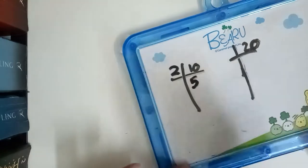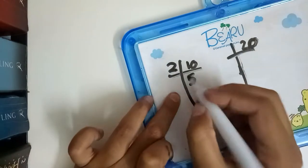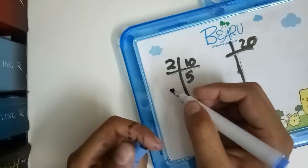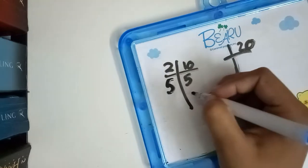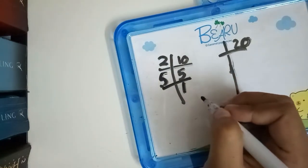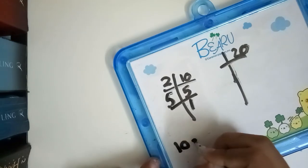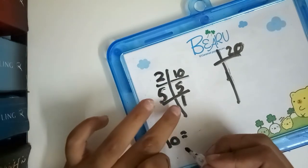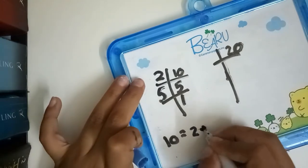First let's do it for 10. So 10 is divisible by 2, so we write a 5. Now is 5 divisible by 2? No. Is it divisible by 3? No. Is it divisible by 5? Yes, so 5 and a 1. So basically 10 is equal to 2 multiplied by 5 multiplied by 1.